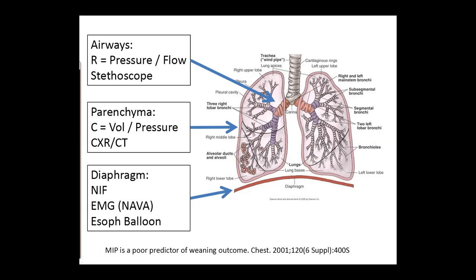Looking at the parenchyma, we assess compliance — volume divided by pressure. Without those parameters, you look at a chest X-ray or CT scan to decide if there is parenchymal disease, effusion, or congestion. For the diaphragm, the Maximum Inspiratory Pressure — also called NIF, NIP, or PImax — is a global assessment of all inspiratory muscle strength. It's measured with an aneroid manometer attached to the endotracheal tube, asking the patient to inspire maximally against an occluded airway. Initial studies suggested a NIF of minus 30 or more negative predicts successful weaning, while minus 20 or closer to zero predicts weaning failure.